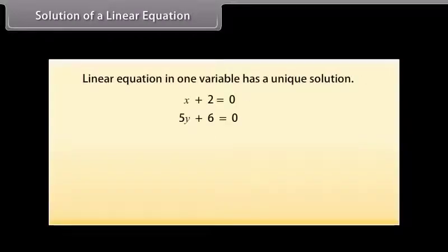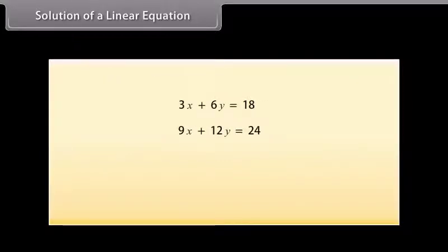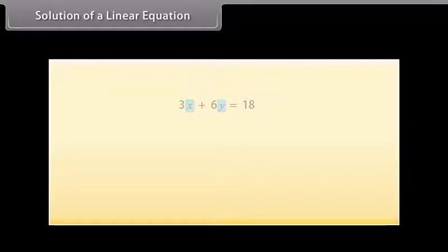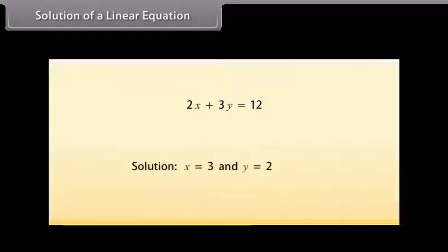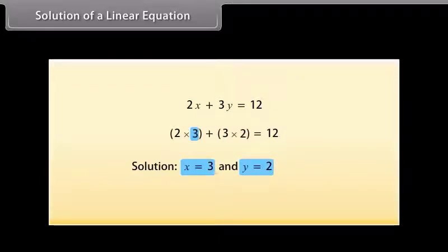We know that every linear equation in one variable has a unique solution. But how many solutions do linear equations in two variables have? As there are two variables in the equation, its solution means a pair of values — one for X and one for Y — which satisfy the given equation. Let us take the equation 2X plus 3Y is equal to 12. X is equal to 3 and Y is equal to 2 is a solution because when you substitute X as 3 and Y as 2 in the equation, you find that the answer becomes 12.